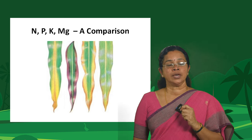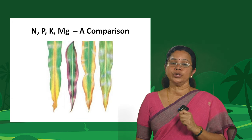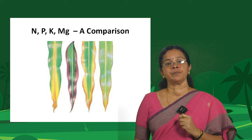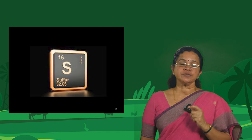Moving on to sulphur — although sulphur is categorized as an immobile element, at times it shows a partially mobile nature. That means sometimes you can see this deficiency in the middle leaves also. If it were strictly immobile, deficiency should only be seen in younger leaves, but at times sulphur deficiency is seen even in the middle leaves — indicating its partially mobile nature.